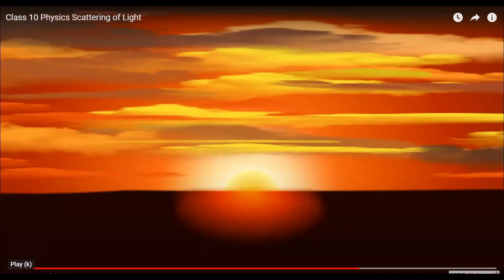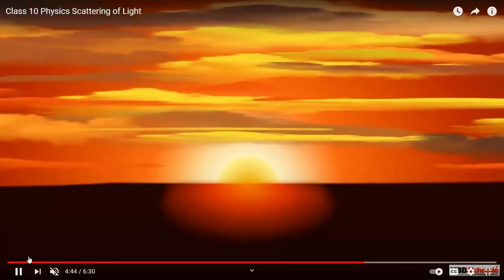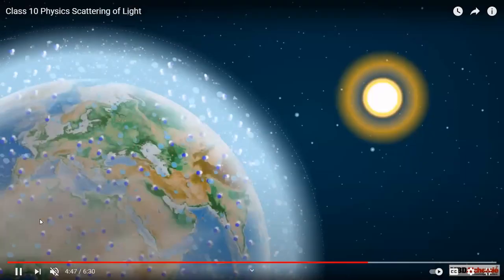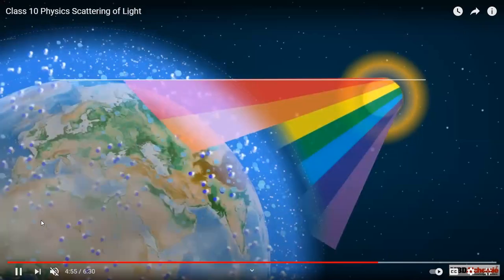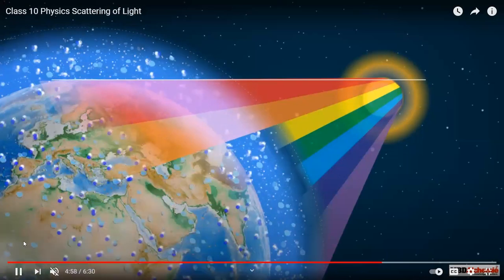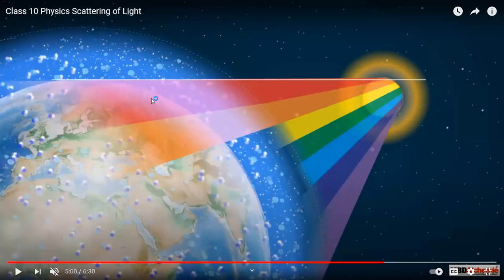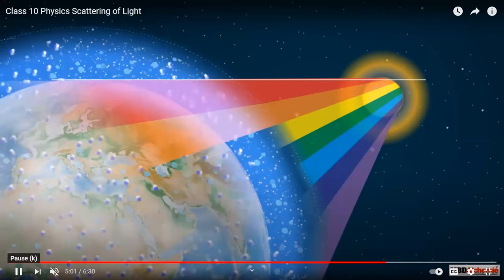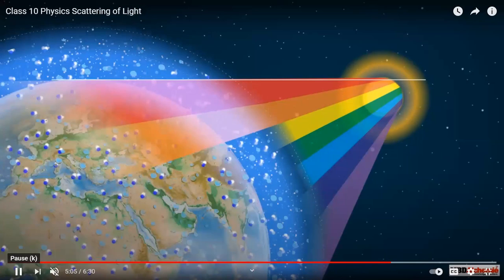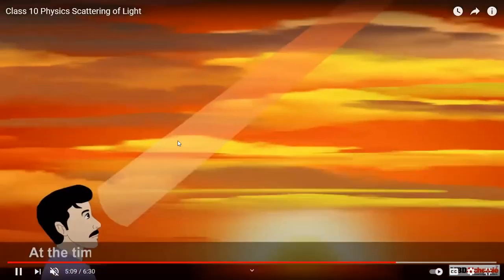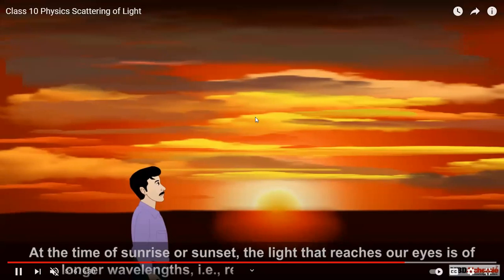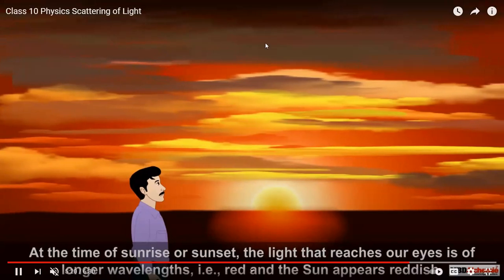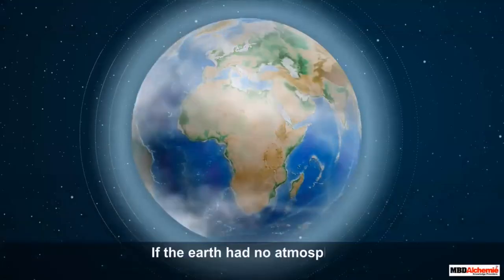Now let's understand why the sun is red in color during sunrise and sunset. Red has the longest wavelength and blue has the shortest wavelength. When the sun is at the horizon — rising or setting — it is at the farthest distance. Red light, having the longest wavelength, can travel farther, so only red light reaches your eye. The blue light is already scattered in the sky. At the time of sunrise or sunset, the light that reaches our eye is of longer wavelength — red — and the sun appears red in color.